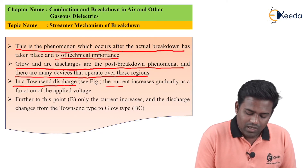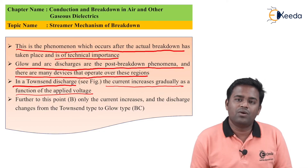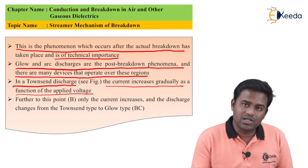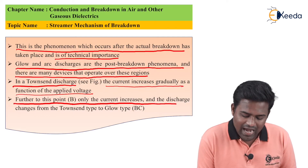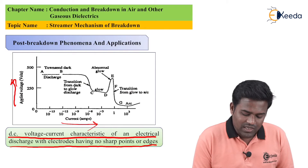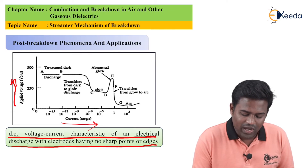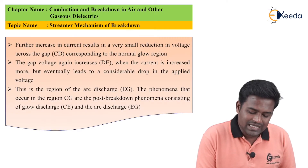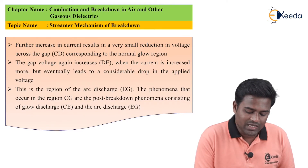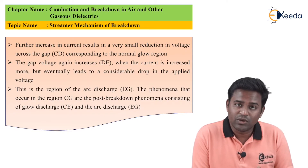In Townsend's discharge, the current increases gradually as a function of applied voltage. As we see in the figure, current increases gradually as voltage is applied, up to point B where only current increases. Then the discharge changes from Townsend type to glow type in region BC. At G to F, it suddenly increases. Further increase in current results in a very small reduction in voltage across the FCD, corresponding to the normal glow region — meaning there will be a glow in the chamber in the C to D region.